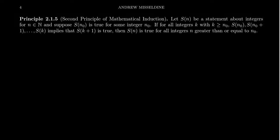So just reading the statement here, let Sn be a statement about integers for n as a natural number. And suppose the statement is true for Sn sub zero for some integer. Also, if for all integers k which are greater than or equal to n equals zero...